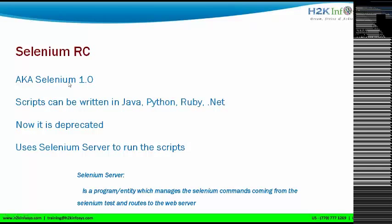Selenium RC can also be called Selenium 1.0 — it was the first version of Selenium introduced to the market. In Selenium 1.0 (Selenium RC) you can write scripts in Java, Python, Ruby, and .NET. Now it is deprecated, meaning it has been outdated. The organization providing Selenium is not encouraging us to use Selenium RC anymore because it is an older version with challenges that have been overcome in the newer version.